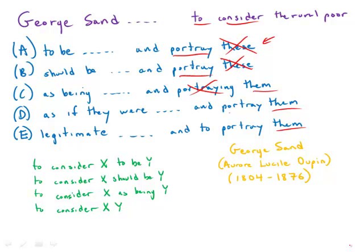Now finally, the big one is the idiom with the verb 'to consider.' So we have all kinds of options here: 'to consider X to be Y,' 'to consider X should be Y,' 'to consider X as being Y.' In fact, all of these are incorrect.